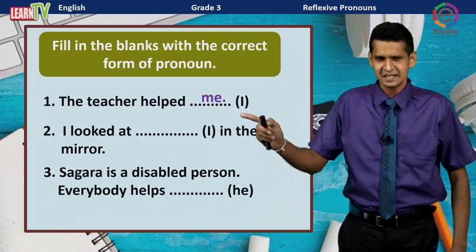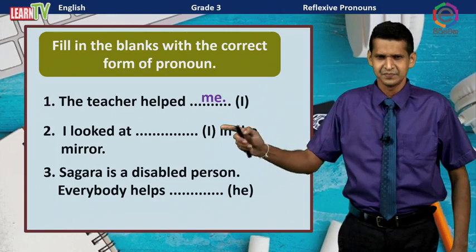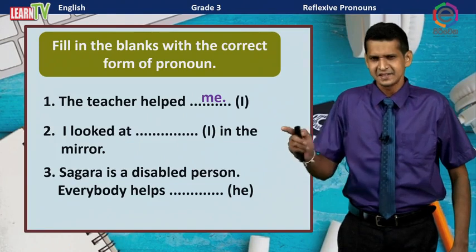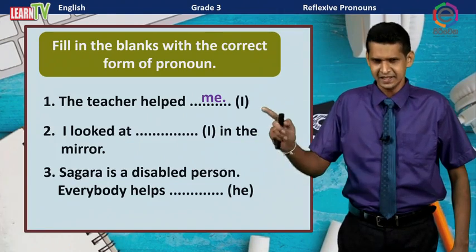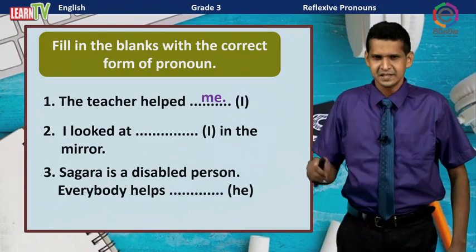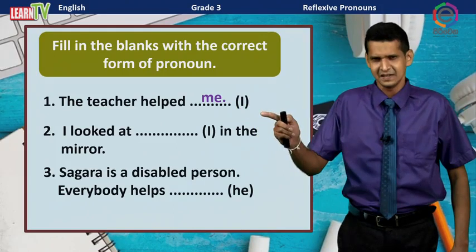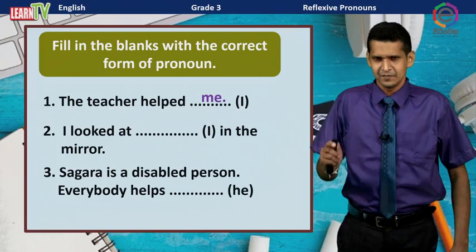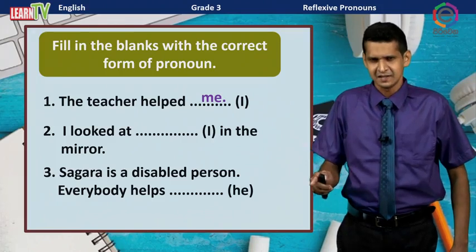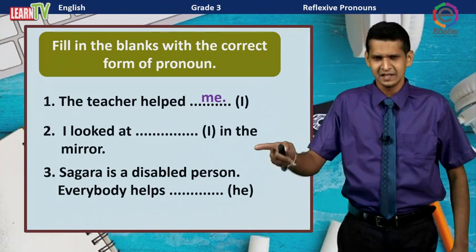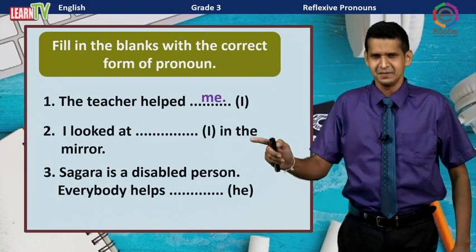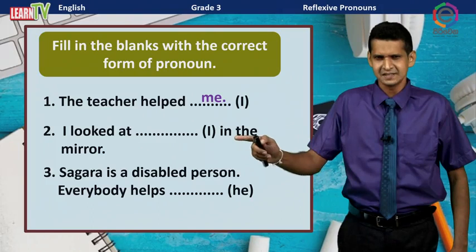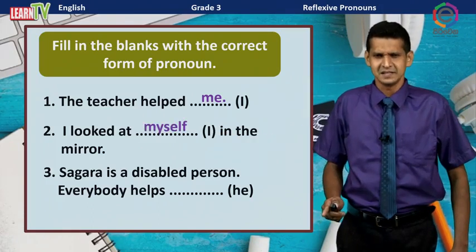Let us move to the second one. I looked at ___ in the mirror. 'I' is the subject, 'looked at' is the verb. We cannot use 'me' here because the subject and object are the same person. We have to use the reflexive pronoun. The answer is: I looked at myself in the mirror.